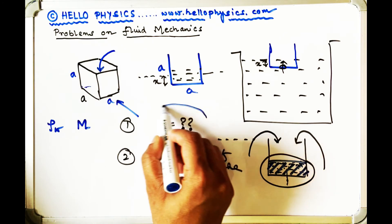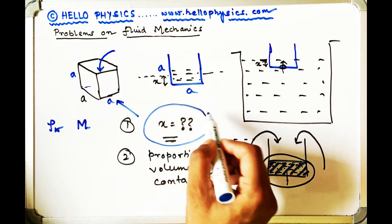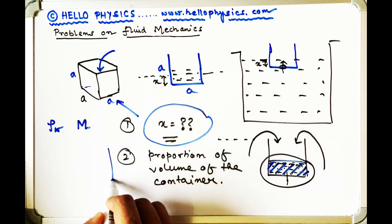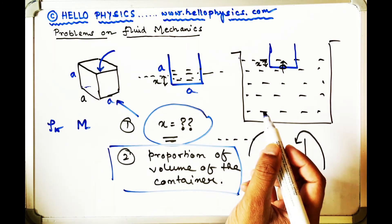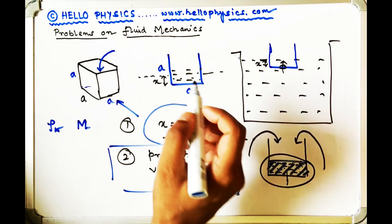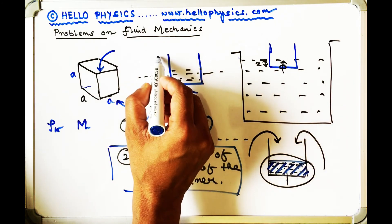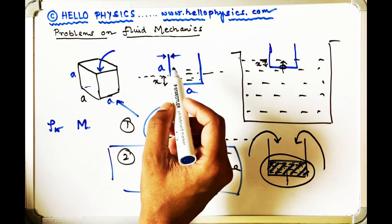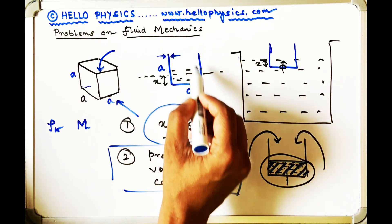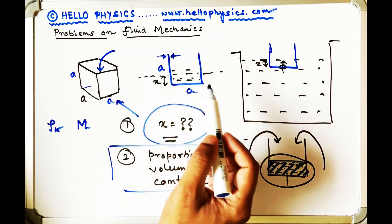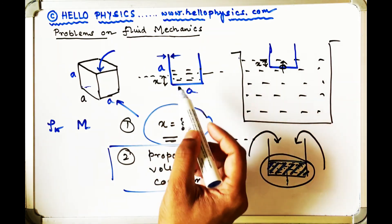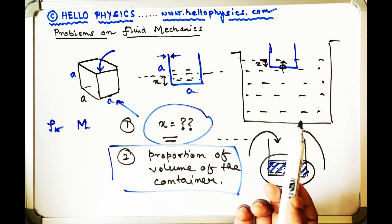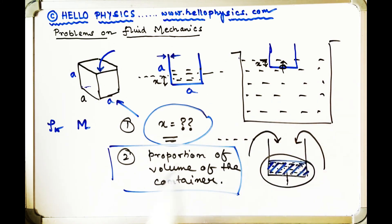We'll solve the first part in the follow-up video, then the second part. One additional piece of information: the thickness of this container is very very small compared to its other dimensions. Try these problems out, and if you're not able to solve them, check the solution in the follow-up video. Thank you.